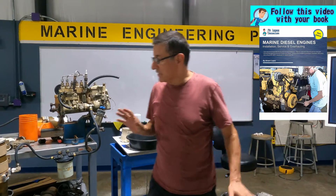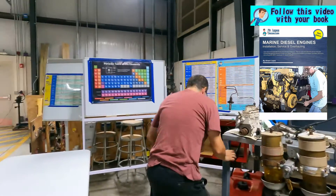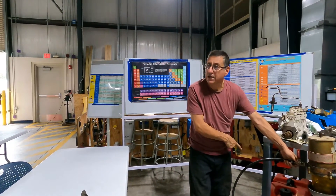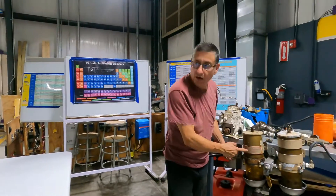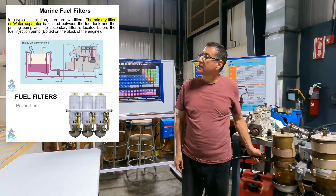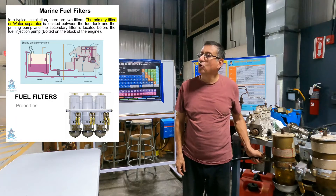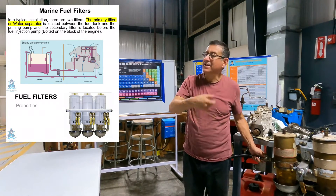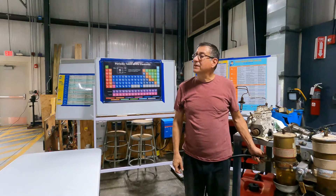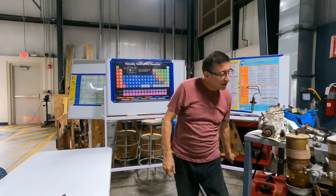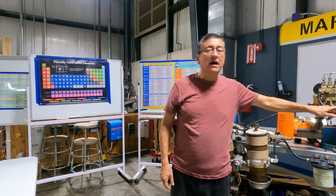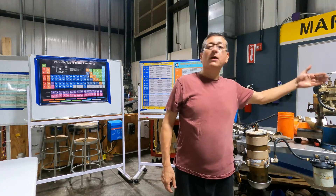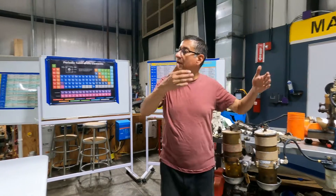Any fuel system has a low pressure side starting in the fuel tank, passing through the primary filters, also called water separator filters, because they separate the water. After that you have a secondary filter, then a priming pump, and a high pressure pump or fuel injection pump. That's the process.